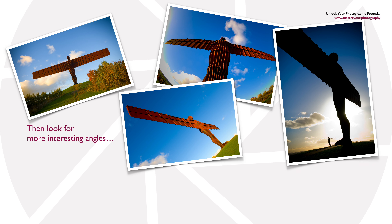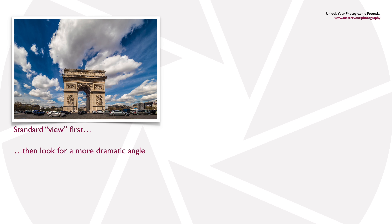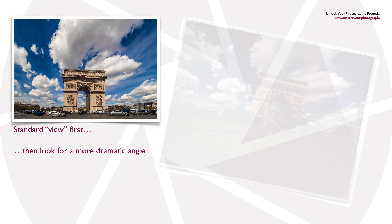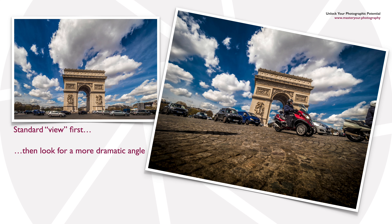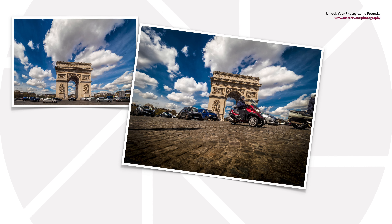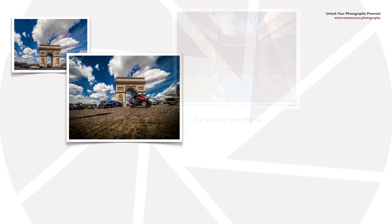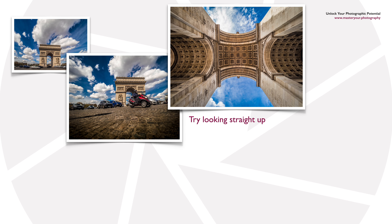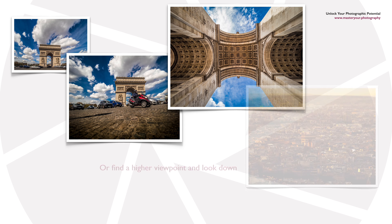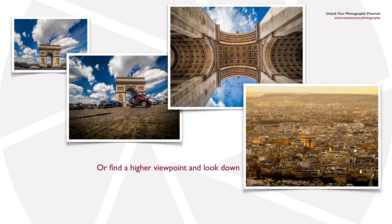If you also incorporate some backlighting to create a silhouette then it makes for a really dramatic image. Here's another example starting with the standard view of the Arc de Triomphe in Paris, and then a slightly more dramatic angle with the camera almost on the road surface. Wait for the right vehicle to come past, and then let's get right under the Arc de Triomphe and look directly up at it for a really graphic eye-catching image. If you can then find a higher viewpoint and look down on it, then we've covered all the angles.